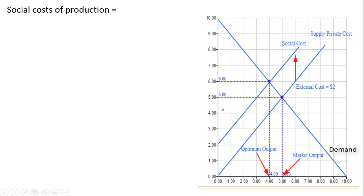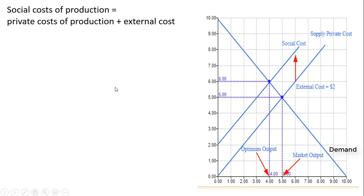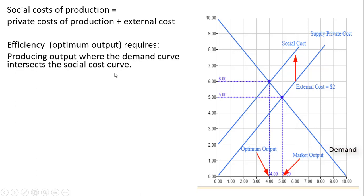For a graphical example dealing with negative externalities: the social costs of production equal the private costs of production plus external costs. Efficiency, or the optimum output, requires producing where the demand curve intersects the social cost curve. We've got a market with a negative externality — a downward sloping demand curve and an upward sloping supply curve, labeled our private cost curve.